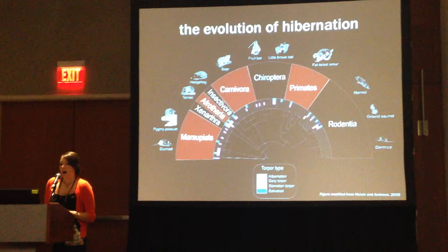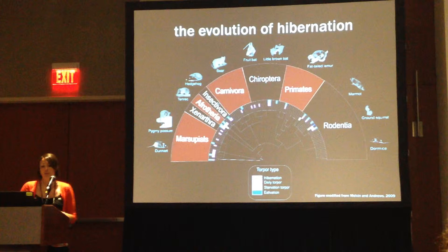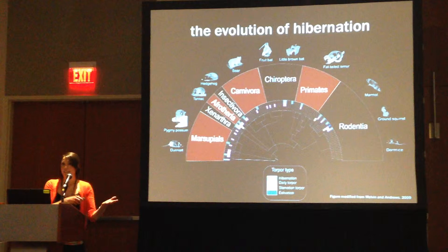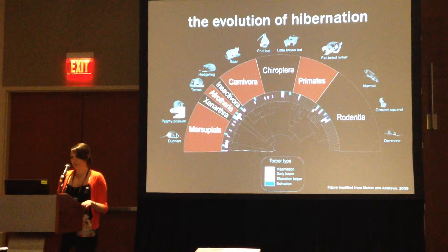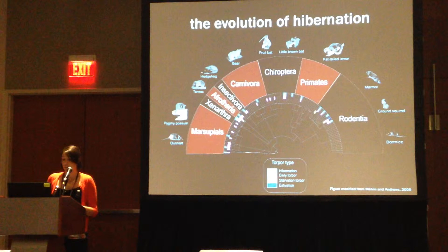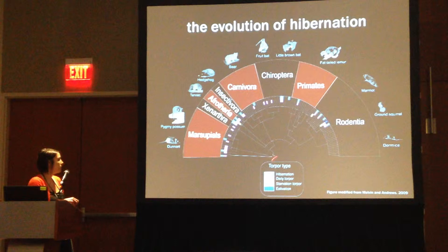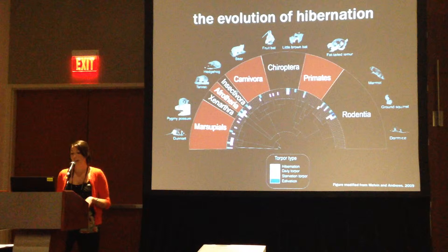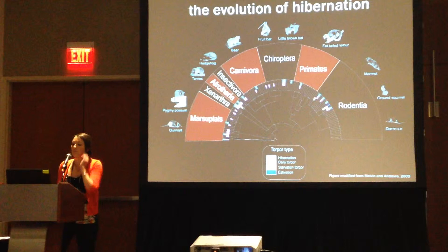Hibernating species are found within the deepest branches of the mammalian phylogeny. This phylogram shows the distribution of species within eight orders that use hibernation, with colored boxes indicating different responses along the spectrum of heterothermy from a daily torpor response to prolonged hibernation. This patchy distribution has generated much discussion on whether the common ancestor of mammals was a hibernator. The first theory is that the common ancestor was not a hibernator and the trait has arisen multiple times through convergent evolution. The second theory is that the common ancestor was a hibernator and this trait has been lost many times but retained in the groups depicted here.